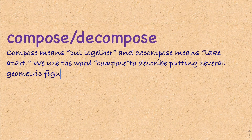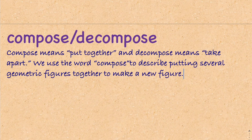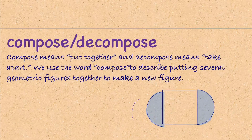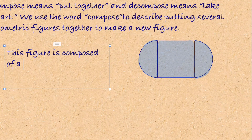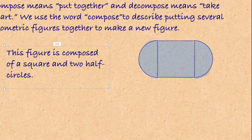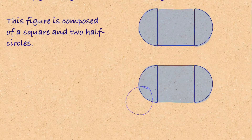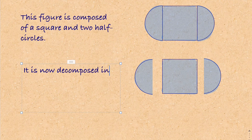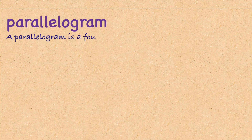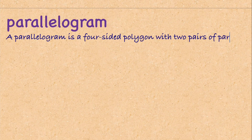'Compose' means put together and 'decompose' means take apart. We use the word 'compose' to describe putting several geometric figures together to make a new figure. For example, this pill shape is composed of a square and two half-circles. And when we take this same figure and decompose it, we have those separate pieces.